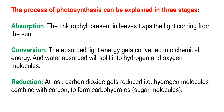The process of photosynthesis can be explained in three stages. The first is absorption, where chlorophyll present in the leaves traps the sunlight from the sun. The second is conversion, where the absorbed light energy is converted into chemical energy and water gets split into hydrogen and oxygen molecules. The third stage is reduction, where carbon dioxide gets reduced — hydrogen molecules combine with carbon to form carbohydrates, or sugar molecules.